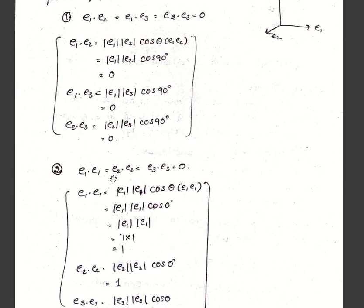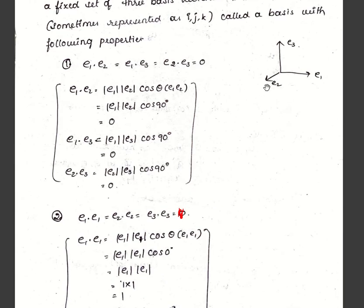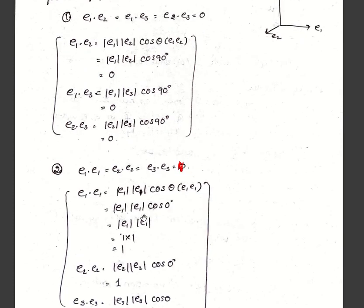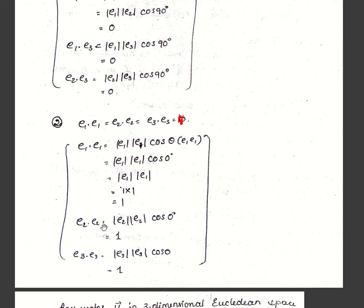The second property is that e1·e1 = e2·e2 = e3·e3 = 1, not 0. When a vector is dotted with itself, the angle between them is 0 degrees, and cos(0°) = 1. Since these are unit vectors, their magnitude is 1, so 1 × 1 × cos(0°) = 1. Similarly, e2·e2 and e3·e3 also equal 1. These are the properties you need to remember.